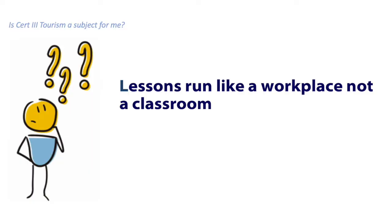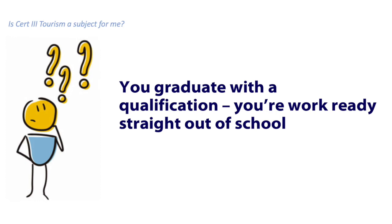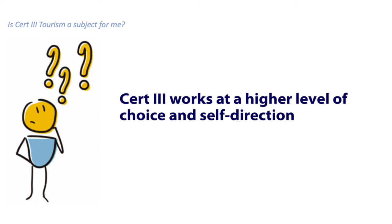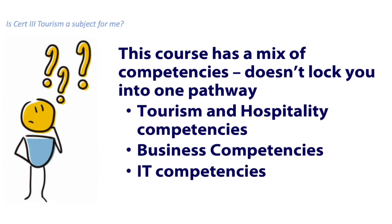Because it's a VET subject, there are many other added benefits. Lessons run like a workplace, not a classroom. It's a $4,000 course if you do it outside of school. You graduate with a qualification and you'll be work ready straight out of school. Certificate 3 works at a higher level of choice and self-direction. The competencies gained can be used towards other qualifications after you finish school. This course has a mix of competencies and doesn't lock you into one pathway — tourism and hospitality, business competencies, and IT competencies.